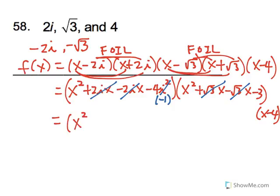We're going to end up with x squared plus 4, since negative 1 times negative 4 will give us a plus 4. And in the middle, we have x squared minus 3, and then we have x minus 4.